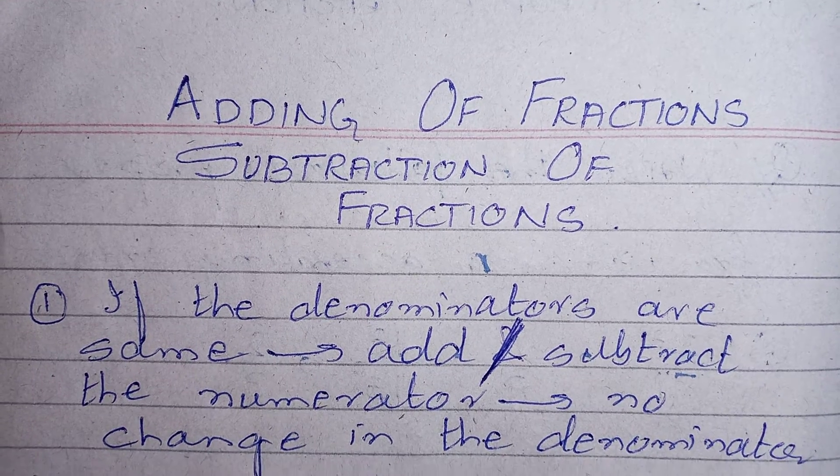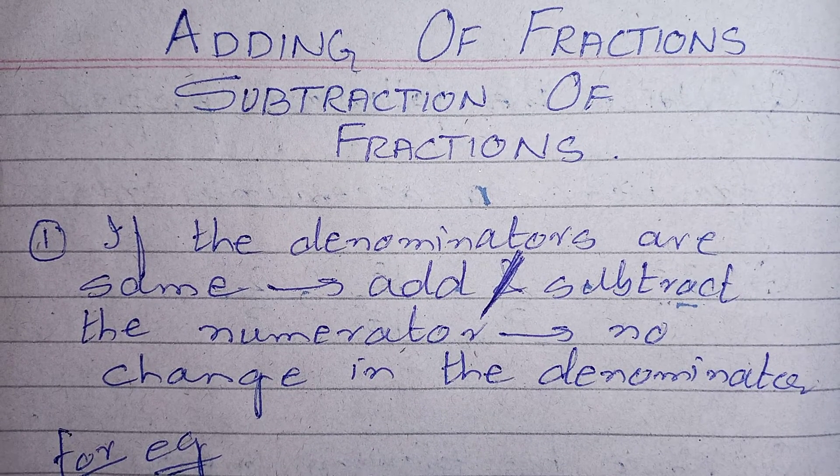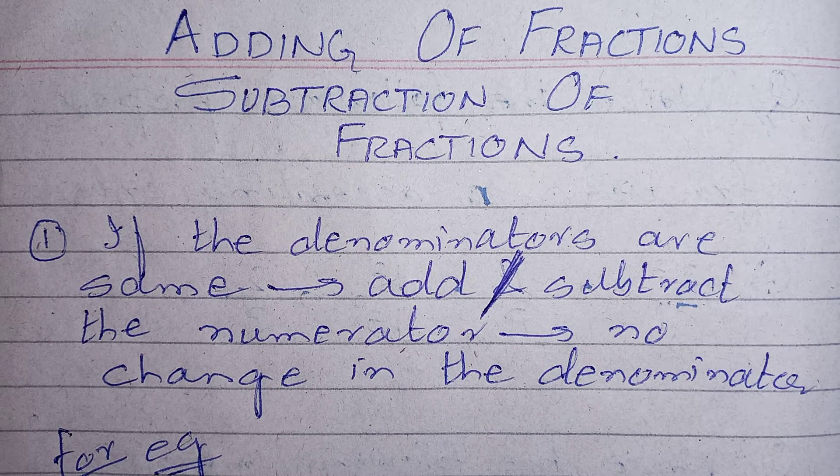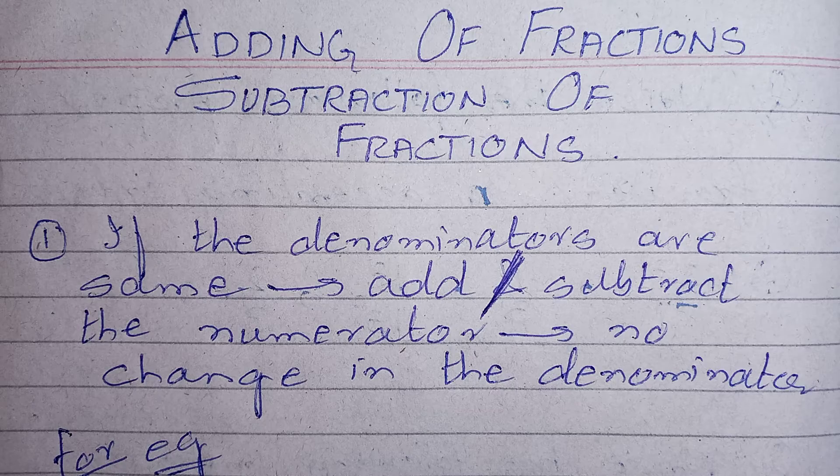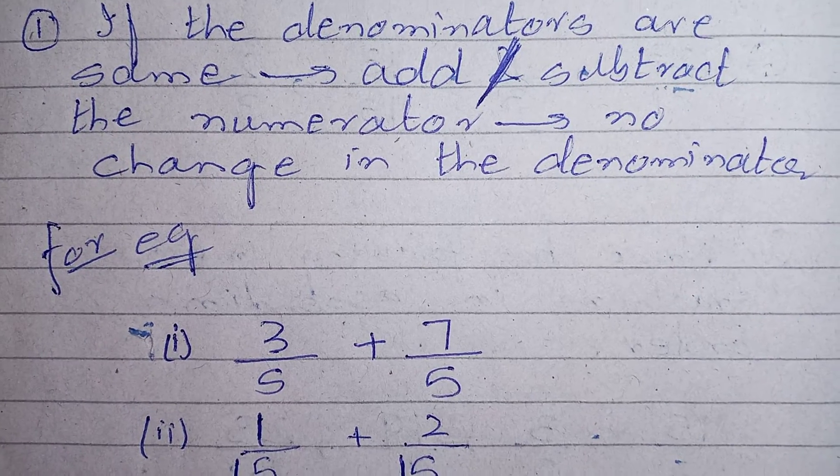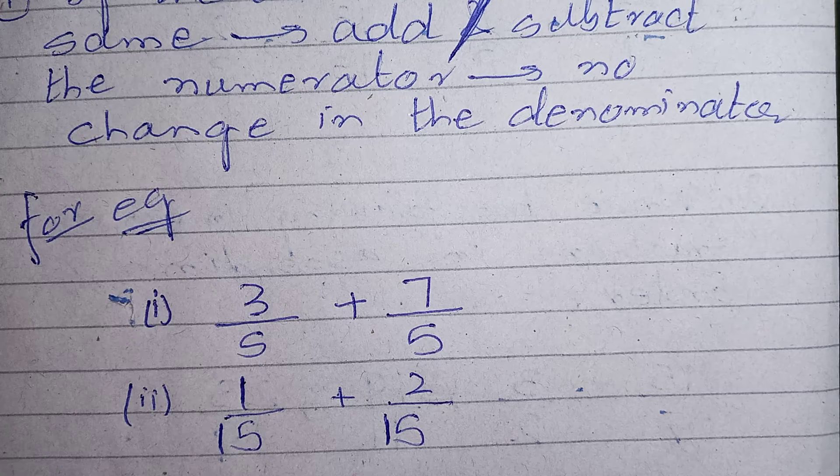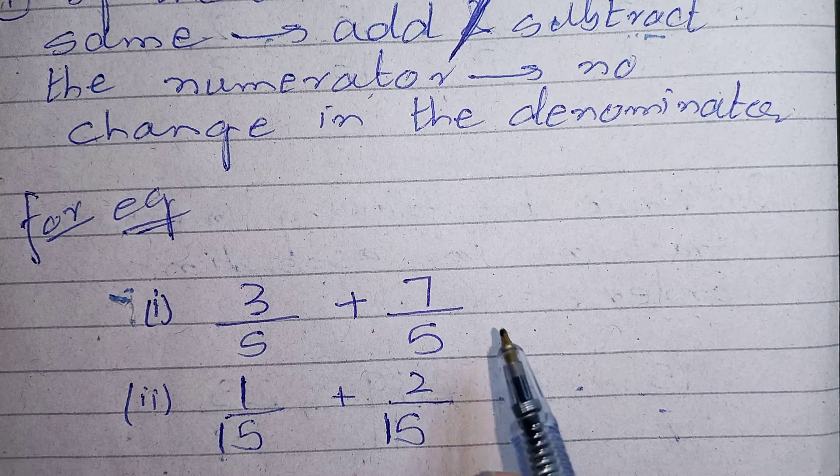Now the first type of fractions are if the denominators of the given fractions are same. So what you will do? You will just keep the denominators same and add or subtract the numerators.